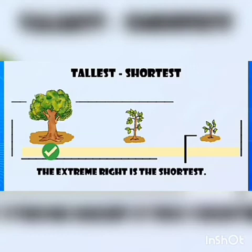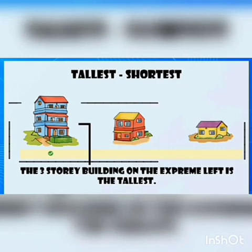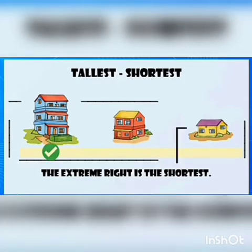This is also for tallest and shortest. The three story building on the extreme left is the tallest. Which one is tallest? The three story building on the extreme left. And in this picture, the extreme right is the shortest — there is a hut on the extreme right which is the shortest.